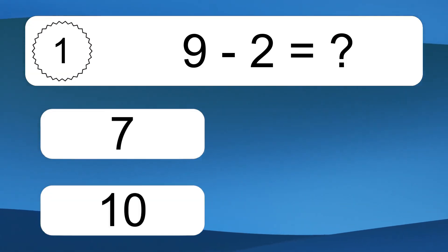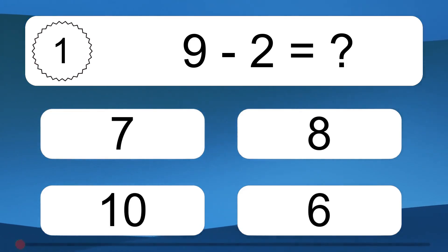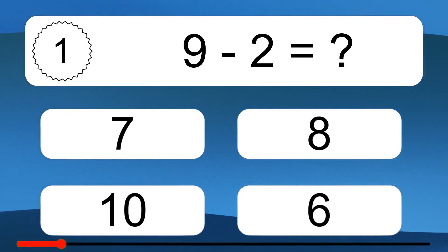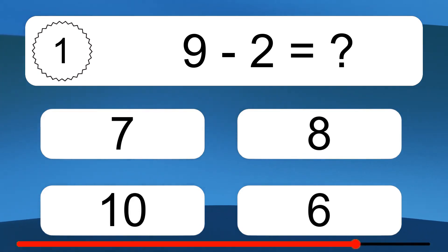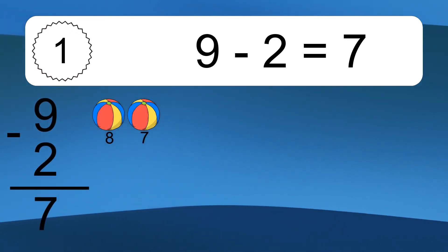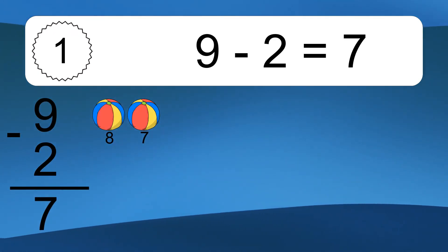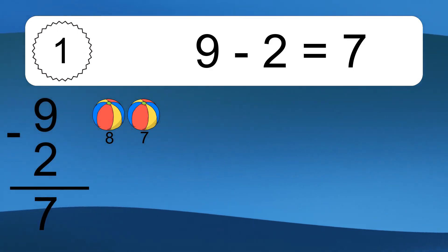9 minus 2 equals what? 9 minus 2 equals 7. Let's count it. 8, 7.